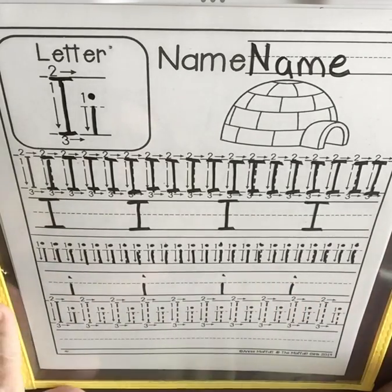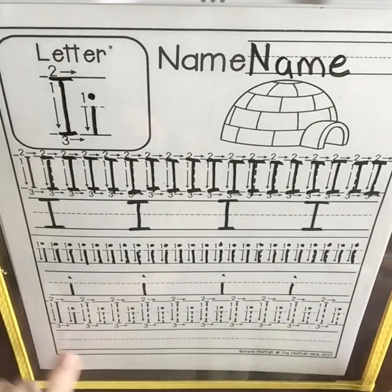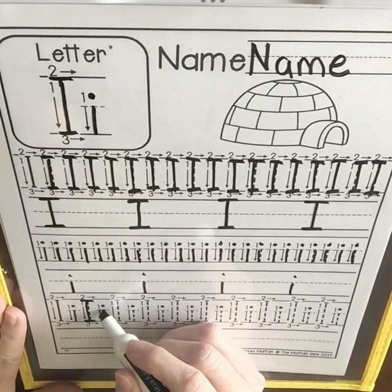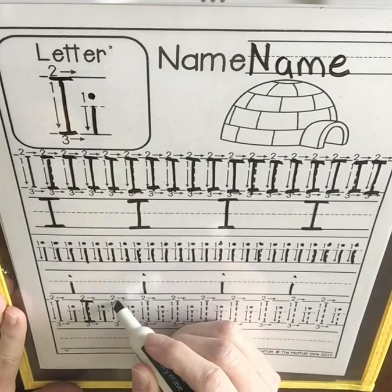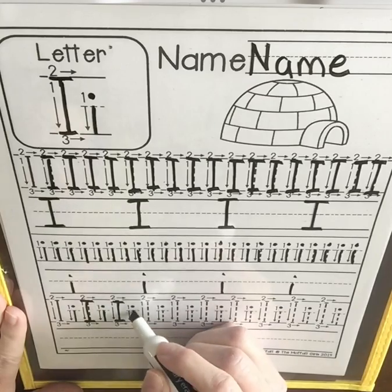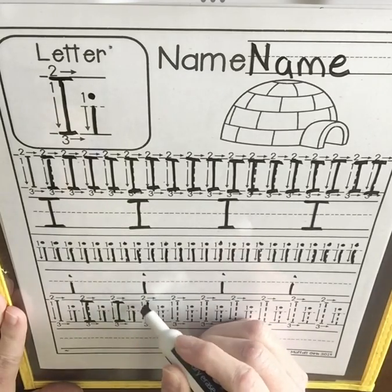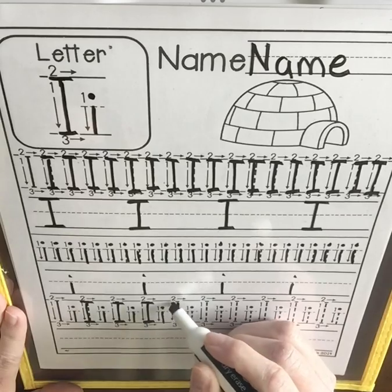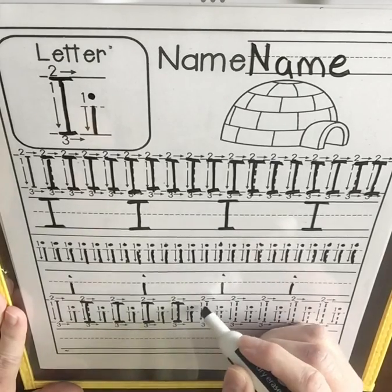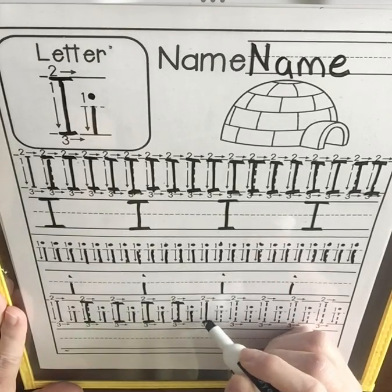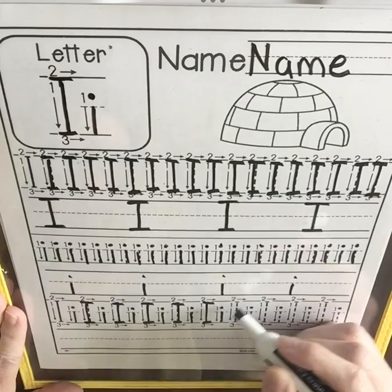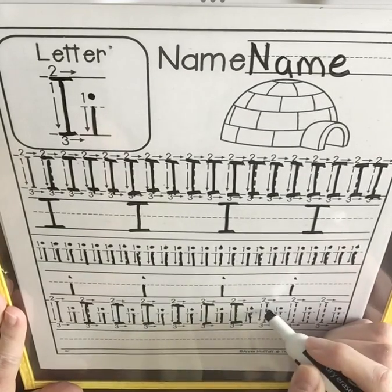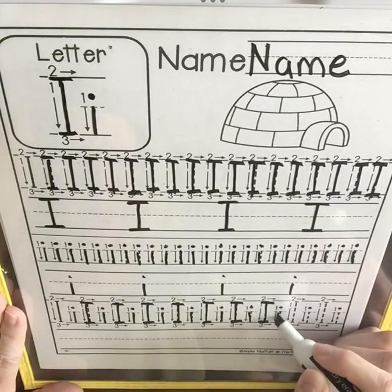And last, we'll do capital and lowercase together. Big line down, back to the top, little line, little line. I'm going to trace all of the capital and lowercase pairs. Two fingers. Oops, I did that one wrong, I'm sorry — but I can fix it on the next one. There we go. You always want to jump back up to the top.